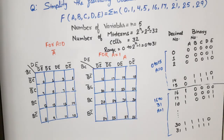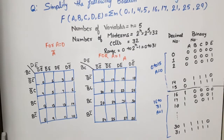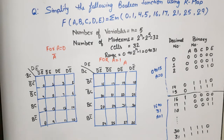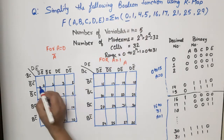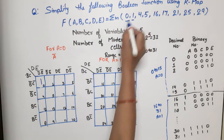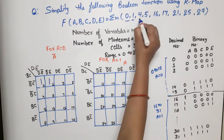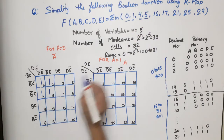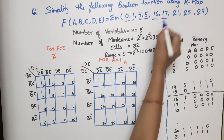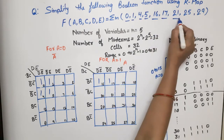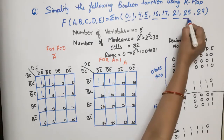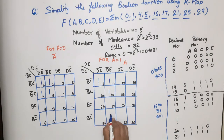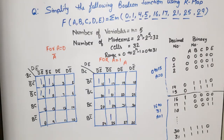Now according to our question, we plot the given minterms. Minterm 0: place 1 here. Minterm 4: place 1. Minterm 5: place 1. Minterm 16: place 1. Minterm 17: place 1. Minterm 21: place 1. Minterm 25: place 1. Minterm 29: place 1. This completes our plotting.